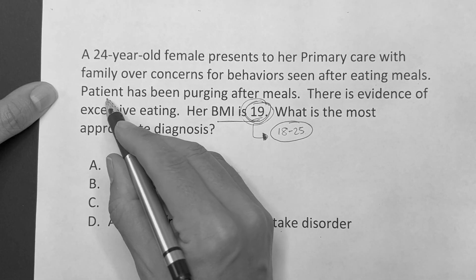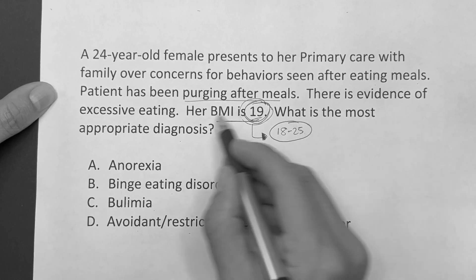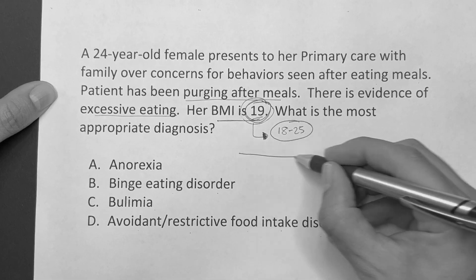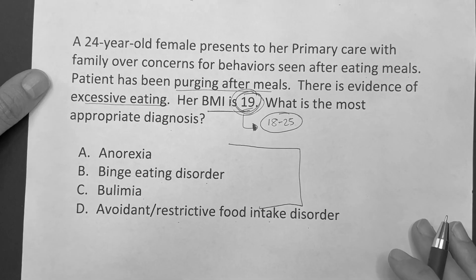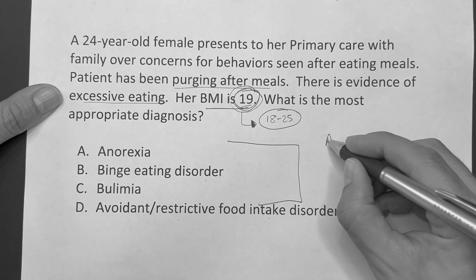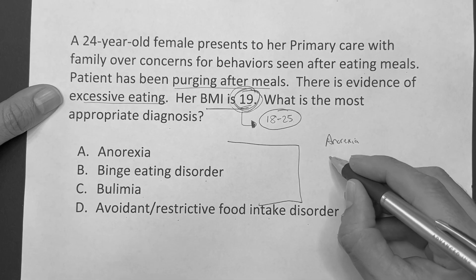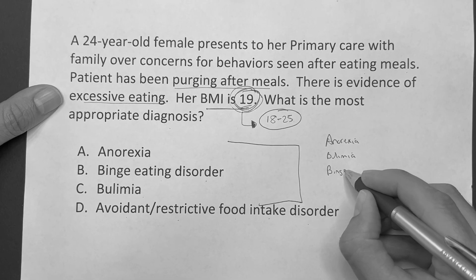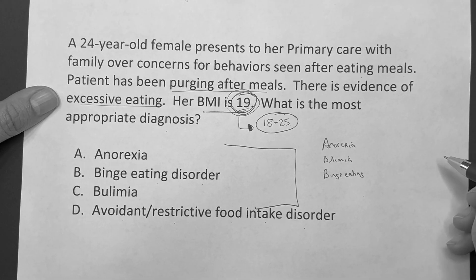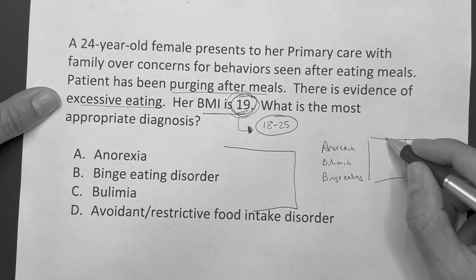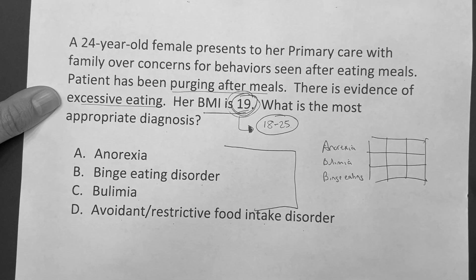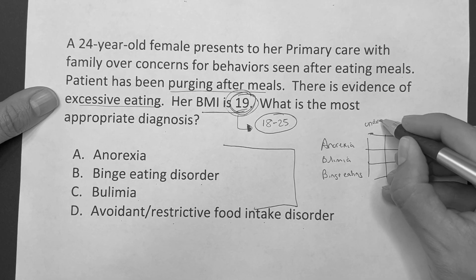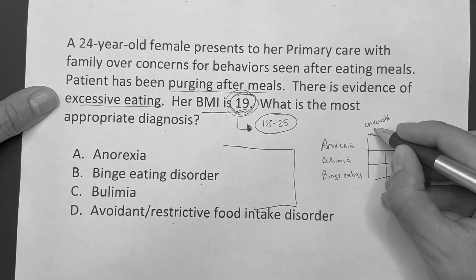The patient has been purging and there is evidence of excessive eating — that's all you need to answer these questions. To differentiate these basic three, all you have to do is know this little comparison box. We'll put anorexia, bulimia, and binge eating. The three categories are: are they underweight — meaning less than 18?